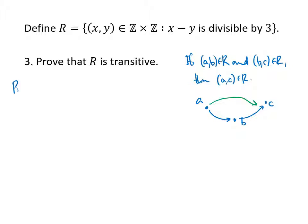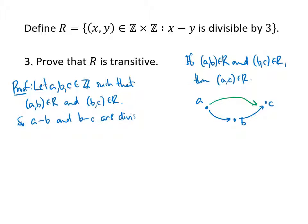So how do we get that? Well, again, it's an if-then. So our proof is going to start by assuming that the hypothesis is true. In this case, let a, b, and c be integers such that (a,b) is in my relation and (b,c) is in my relation. So that means that a minus b and b minus c are both divisible by 3. And that means that a minus b is 3M and b minus c is 3N for some integers M and N. That's what it means to be divisible by 3.